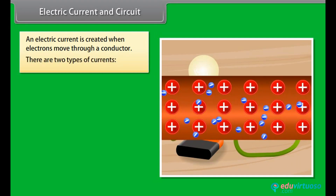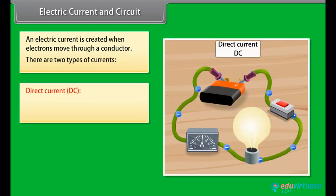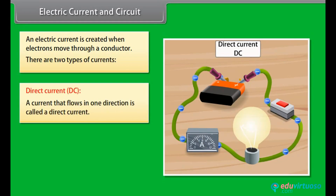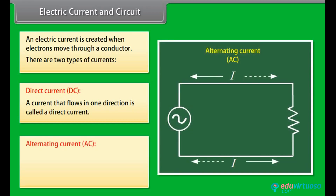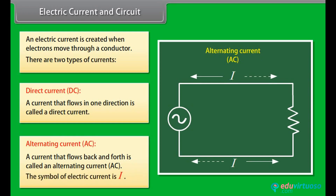There are two types of currents. A current that flows in one direction is called a direct current, or DC. For example, a battery produces a direct current. A current that flows back and forth is called an alternating current, or AC. The symbol of electric current is I.